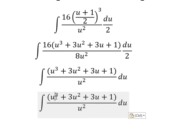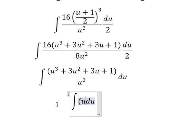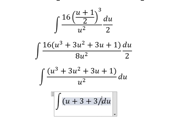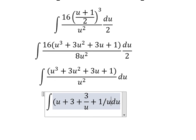Now we divide each term in the numerator by u². u³ divided by u² gives u, 3u² divided by u² gives 3, 3u divided by u² gives 3/u, and 1 divided by u² gives 1/u². So we have the integral of (u + 3 + 3/u + 1/u²)du.